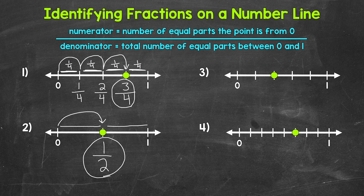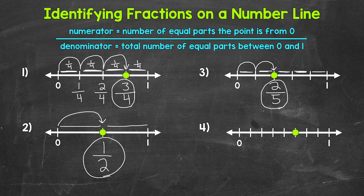Let's move on to number three, and we'll start with the denominator. How many total equal parts has the distance between zero and one been divided into? We have one equal part, two equal parts, three equal parts, four equal parts, five equal parts. So we have fifths here — each part is one fifth of the whole. Our denominator is five. Now for the numerator: how many equal parts is the point away from zero? One, two equal parts. So two is our numerator. Our fraction for number three is two fifths.